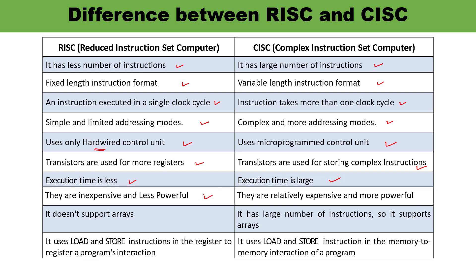RISC is less expensive and less powerful — less powerful because it can handle only simple operations. CISC processors are relatively expensive because they have a large number of instructions that take more than one clock cycle. However, since they have the capability to perform complex tasks quickly, they are very powerful.